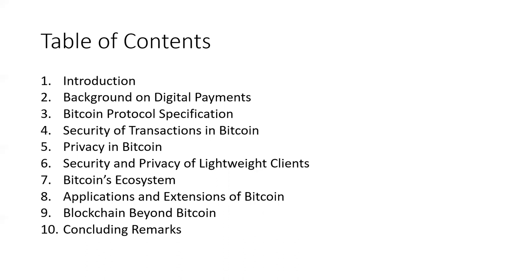Chapter six dives into wallets — specifically, the security and privacy issues of using a lightweight wallet using simple payment verification, SPV. First it does a detailed explanation of how SPV works. Then it talks about some of the security capabilities SPV has, and then it talks about privacy provisions for SPV: bloom filters, leakage, privacy leakage due to the network layer, leakage due to how the bloom filters work, and so on.